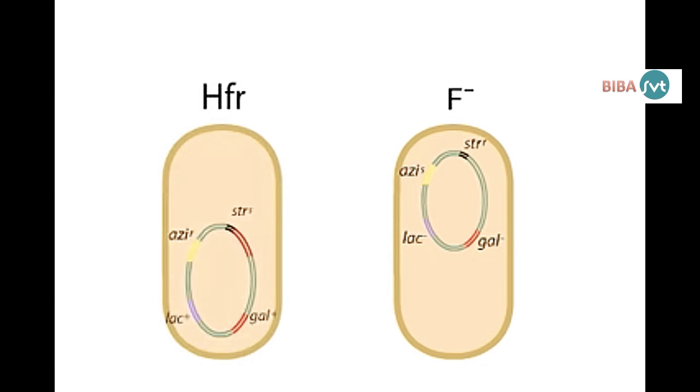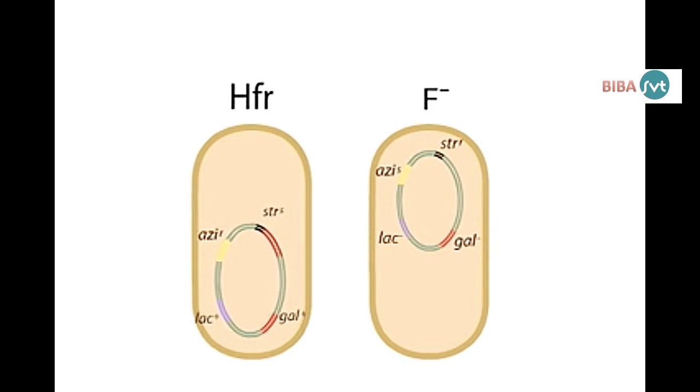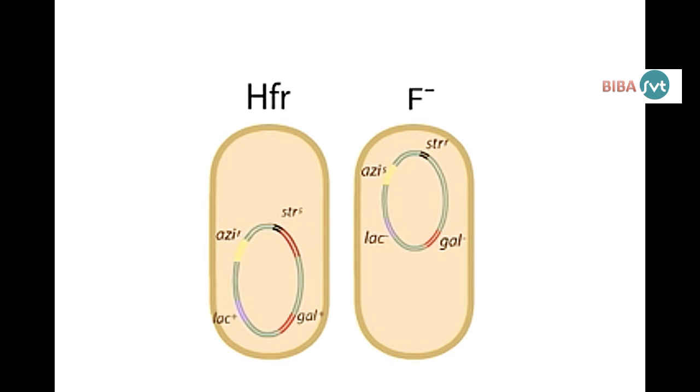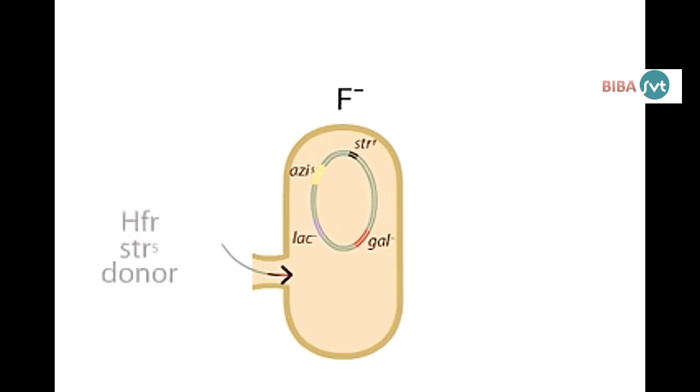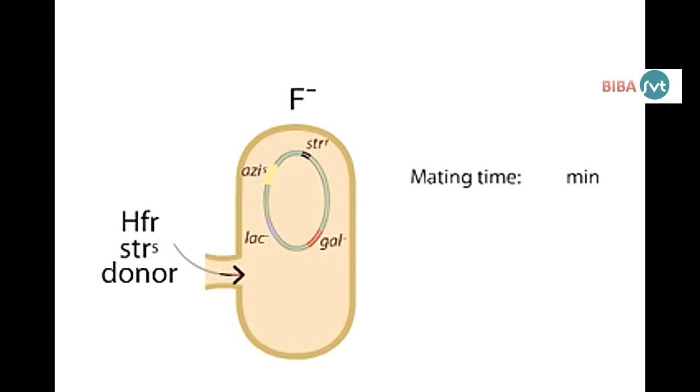The recipients are mated with HFR donors that carry these wild-type alleles and are streptomycin sensitive. As conjugation begins, the F-origin is nicked and DNA strand transfer starts. Once the F-origin and streptomycin gene enter the recipient, we start the mating clock.